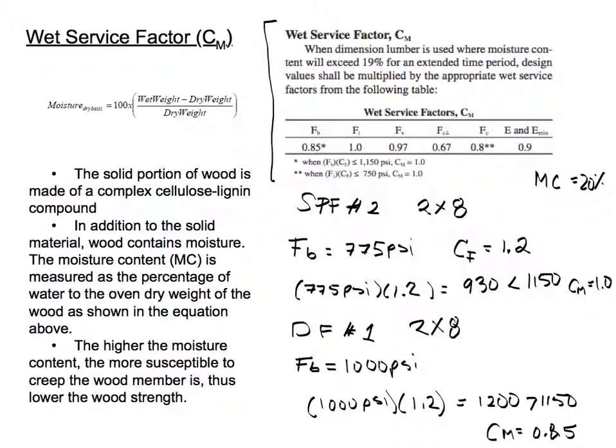We have another note here when it comes to the member in compression parallel to grain. When the bending stress FC times the size factor is less than or equal to 750 psi, then our wet service factor will be 1.0.